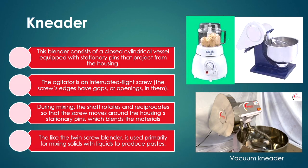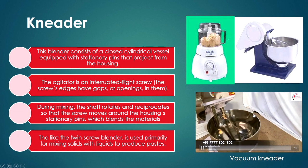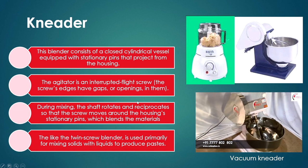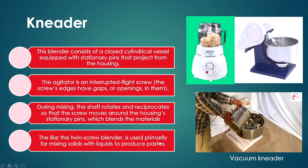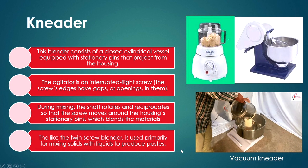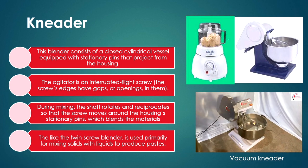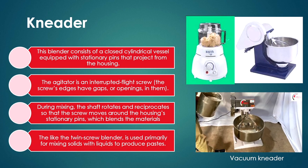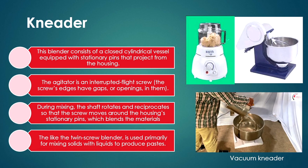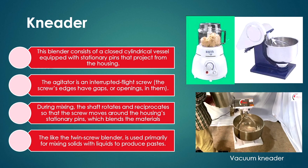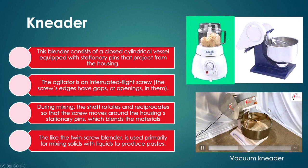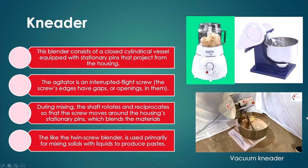The kneader is a batch type also used domestically. It consists of a closed cylindrical vessel with stationary pins projecting from the housing. The agitator is an interrupted flight screw with gaps or openings in the screw edges. During mixing, the shaft rotates and reciprocates so that the screw moves around the housing's stationary pins, which blends the material. Like the twin screw blender, it is used primarily for mixing solids with liquids to produce pastes.